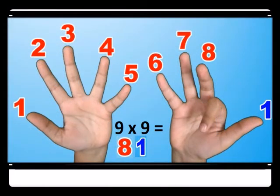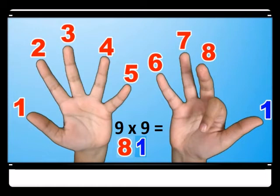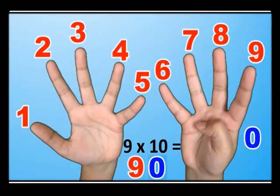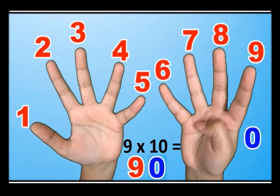For nine times nine, you count up to nine and bend the ninth finger. You have eight before the bent finger and one after, so we have eighty-one. Nine times nine equals eighty-one. For nine times ten, you bend the tenth finger — the right thumb — so you have nine before the bent finger and zero after, giving you ninety.